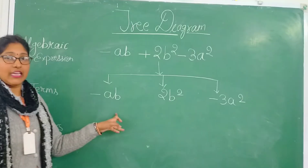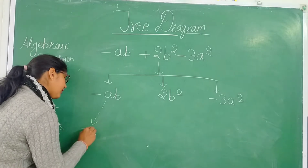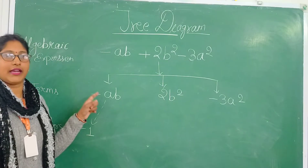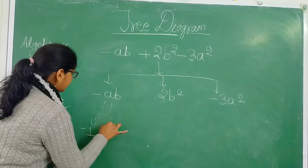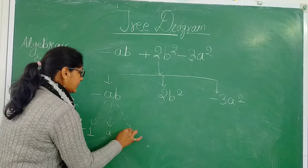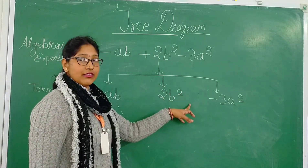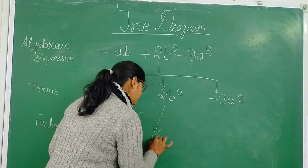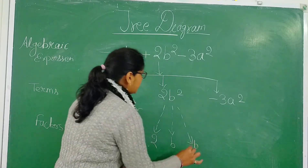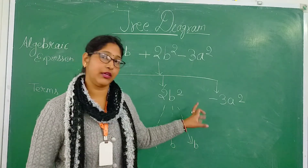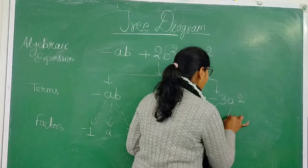The term minus ab is formed by minus 1, a, and b. Whenever a term is written with a minus sign, we use minus 1 as a factor. The second term 2b² is formed by multiplying 2, b, and b, because b² means b into b. The third term minus 3a² has four factors.